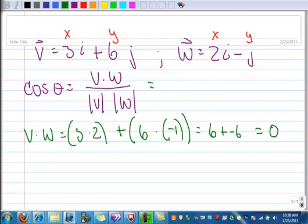Before I go any further, look at this. The dot product is 0. It doesn't even matter what's underneath, because 0 divided by anything is 0.